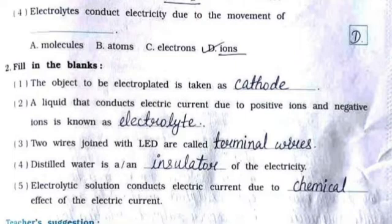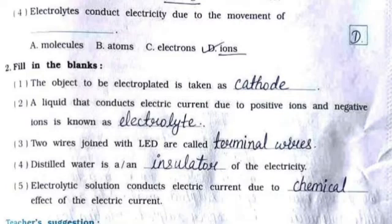Question 2 — Fill in the blanks: 1. The object to be electroplated is taken as cathode. 2. A liquid that conducts electric current due to positive ions and negative ions is known as electrolyte. 3. Two wires joined with LED are called terminal wires. 4. Distilled water is an insulator of electricity. 5. Electrolytic solution conducts electric current due to the chemical effect of electric current.